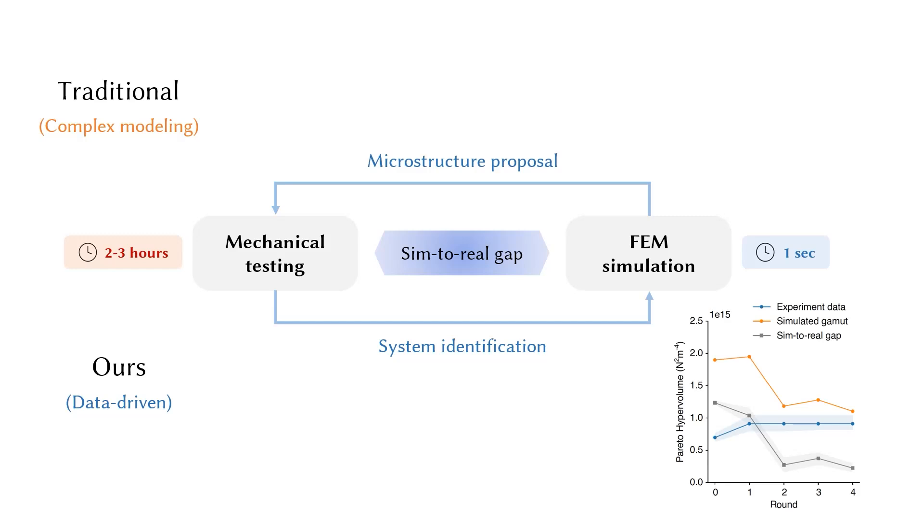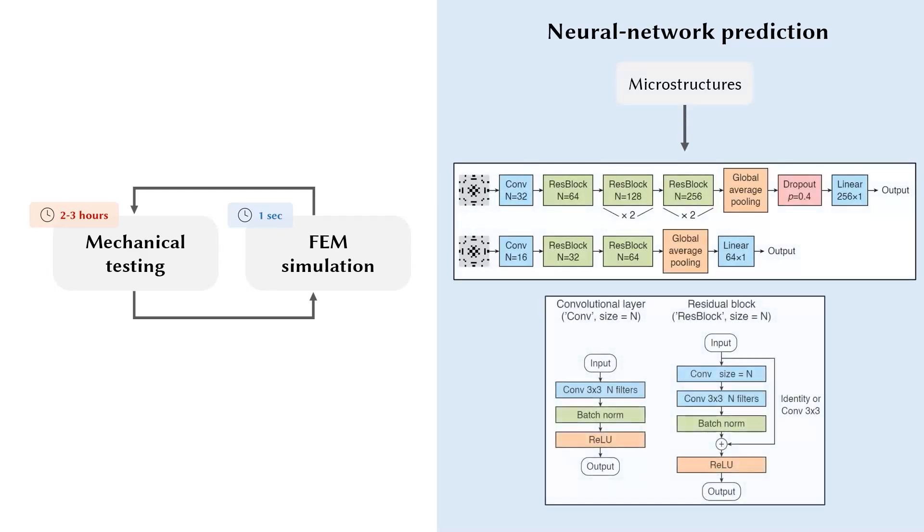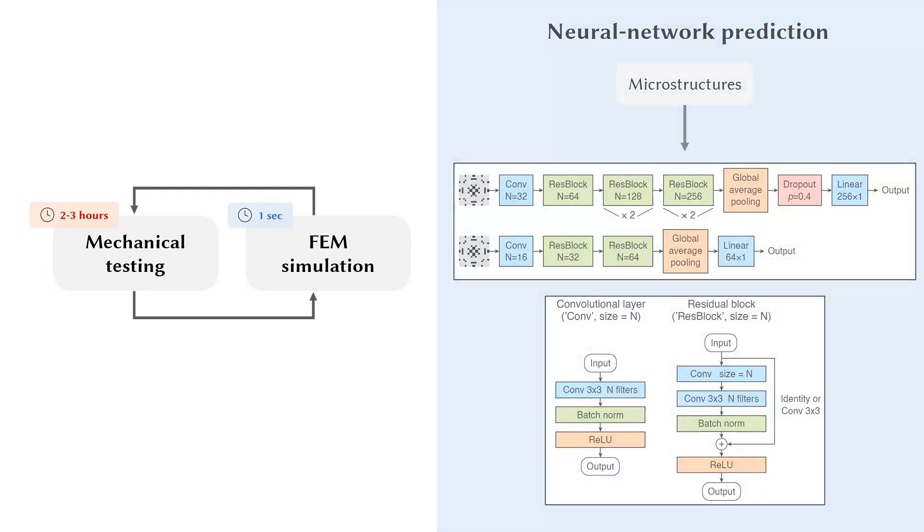But one more question remains at this point. How does the simulator know what designs to propose? Since we effectively use simulation as the surrogate model for mechanical testing, we can further introduce a pair of convolutional neural networks to be the surrogate model for simulation. The neural networks are even faster than simulation, where the computational cost of each network inference is measured using microseconds.